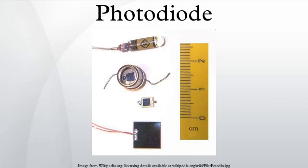Photovoltaic mode: When used in zero bias or photovoltaic mode, the flow of photocurrent out of the device is restricted and a voltage builds up. This mode exploits the photovoltaic effect, which is the basis for solar cells. A traditional solar cell is just a large area photodiode.